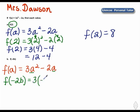3 times the square of negative 2b minus 2 times negative 2b.